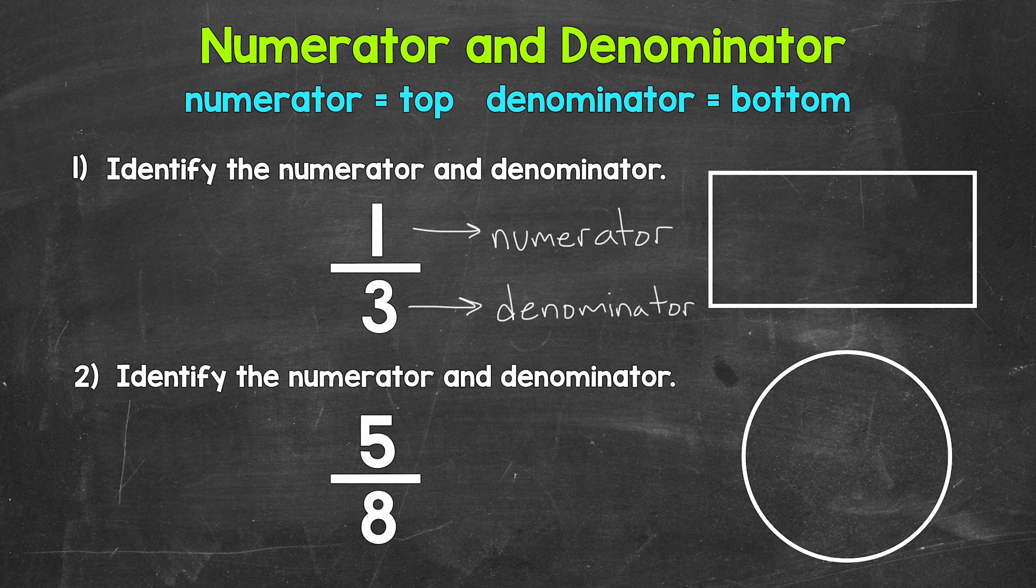Now what do these numbers mean? What does this fraction mean? We will start with the denominator. The denominator tells us the total number of equal parts a whole has been divided into. For 1/3, 3 is our denominator. So the whole needs to be divided into 3 equal parts.